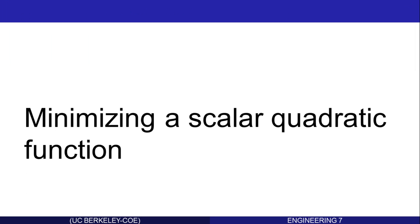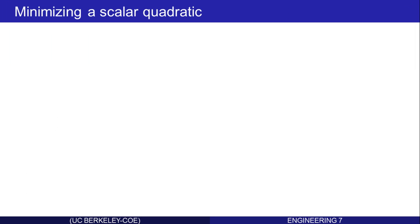Let's talk about minimizing a scalar quadratic function. Suppose I have this quadratic polynomial, a plus bx plus cx squared, and I want to minimize that over all possible values of real x. That's what I mean by x in R. x is a real number.